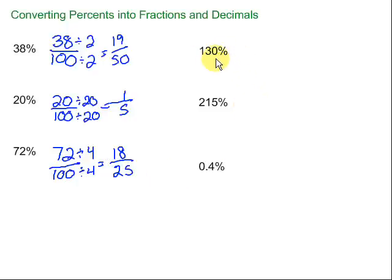Now let's look at some other ones that might be a little bit more challenging, but we can still do. 130%. 130% still means per 100. So it would be 130 over 100. Again, we can simplify. Let's divide by 10 on the top and bottom. 130 divided by 10 is 13 over 10.